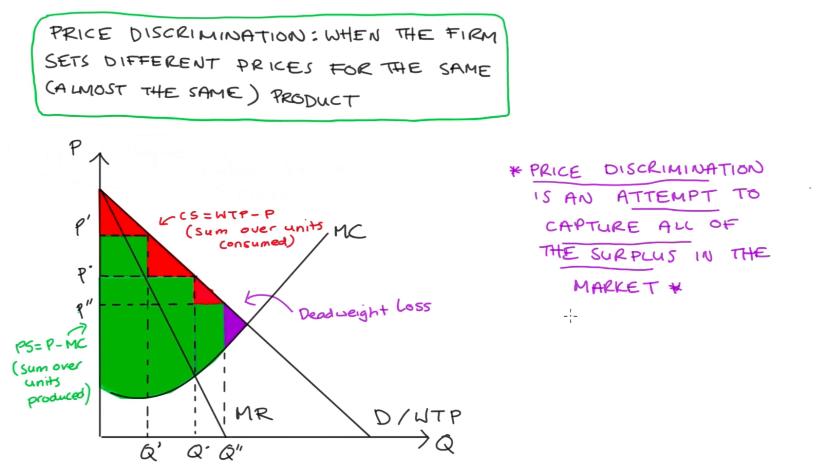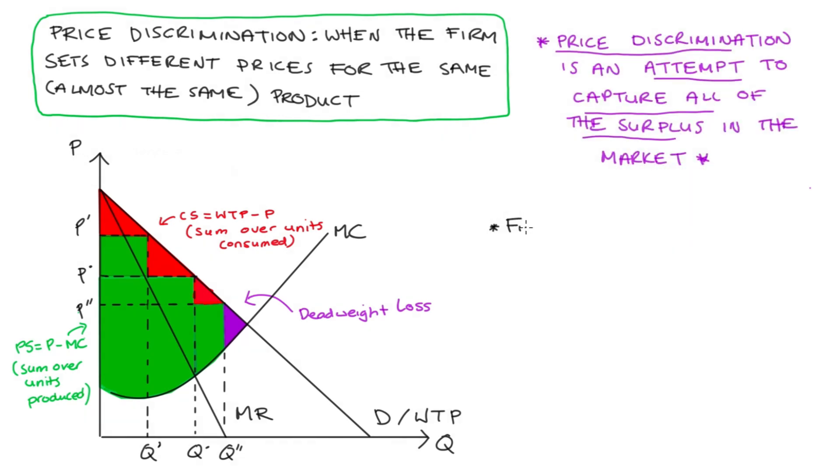Now, I know what you're thinking. How exactly does a firm price discriminate? Well, typically economics textbooks divide price discrimination into three different types. We have first degree or perfect price discrimination, second degree or menu pricing, and third degree price discrimination. So I will just now briefly, very briefly review these three types.